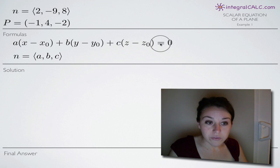And in this formula, the normal vector n is represented by the coefficients a, b, and c. So the normal vector n, these three coordinates here are a, b, and c, like our 2, -9, and 8.